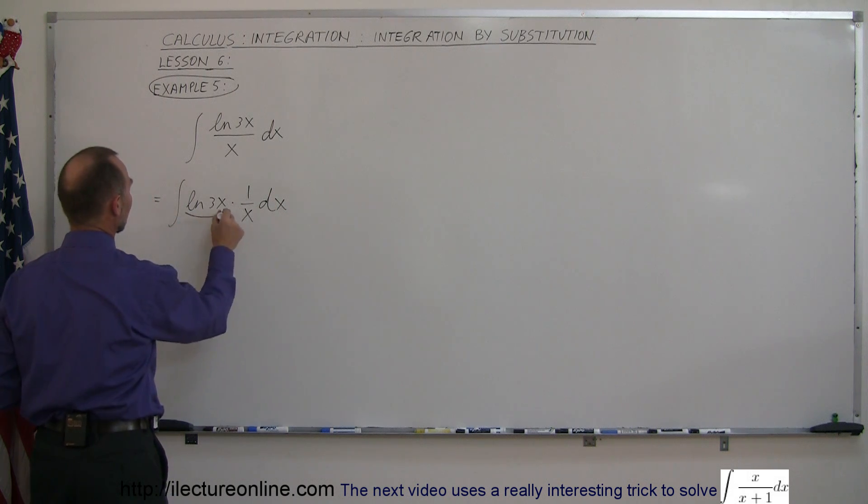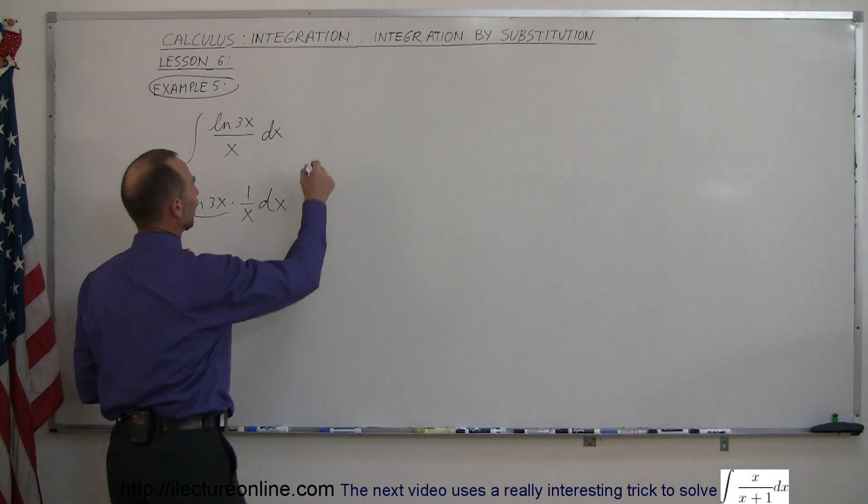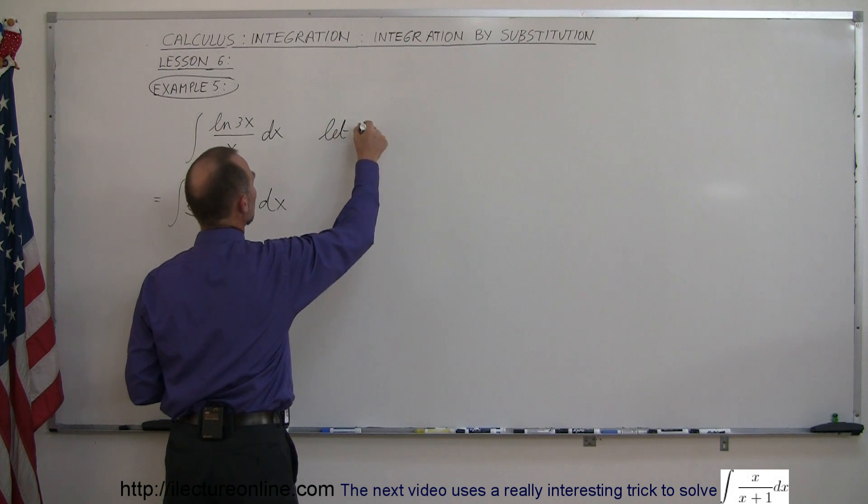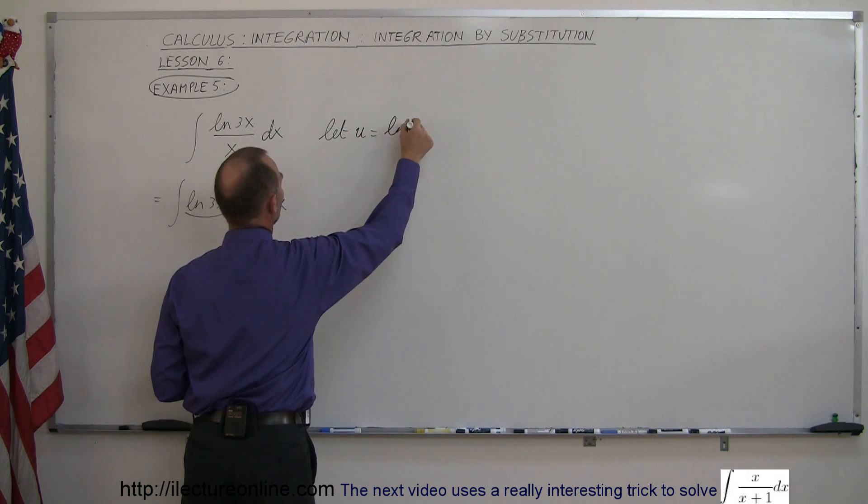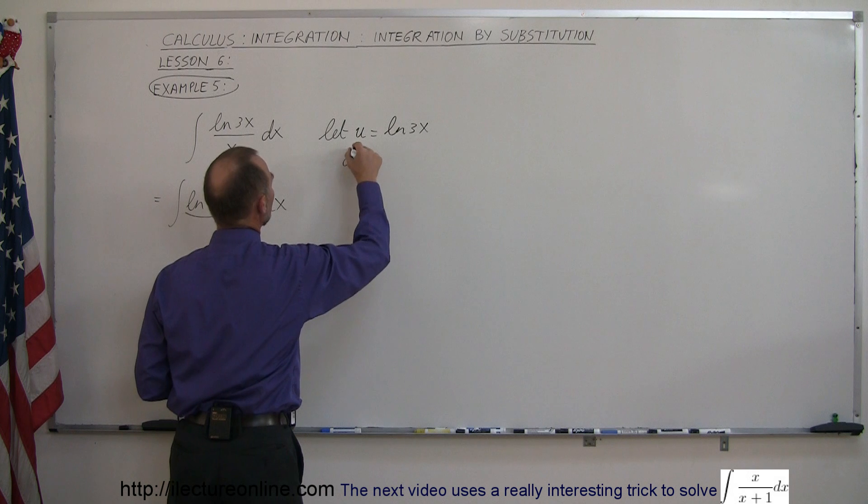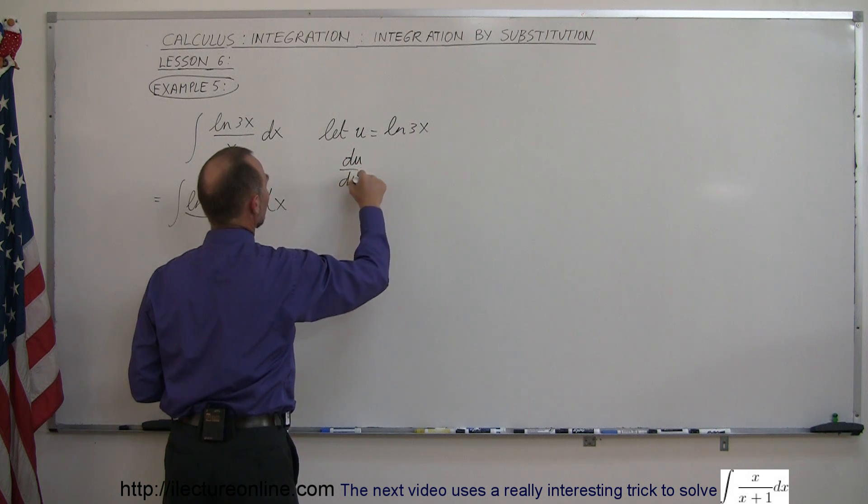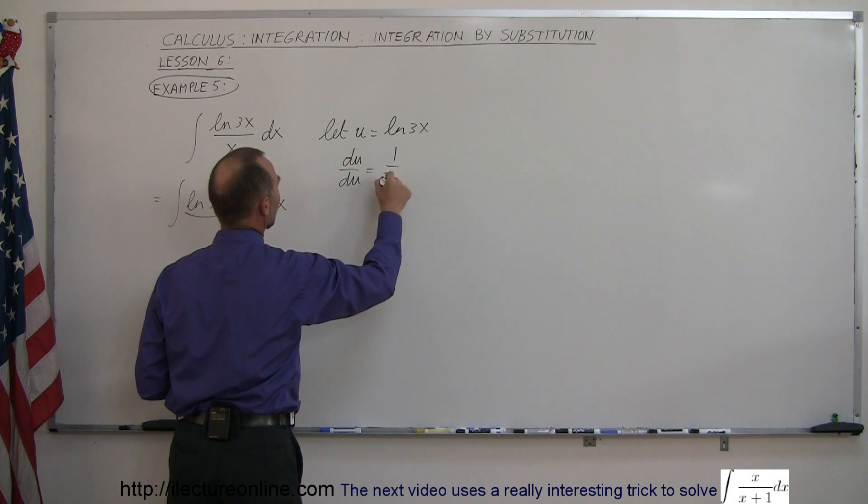And then I'm going to take this here and substitute that for u. So let u equal the natural log of 3x. So du dx, the derivative of that, is equal to 1 over 3x.